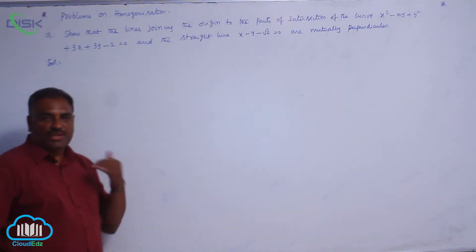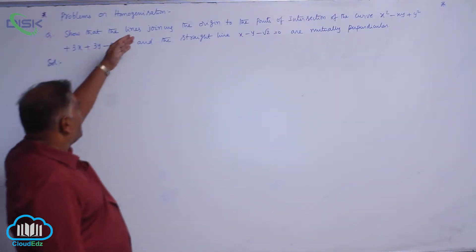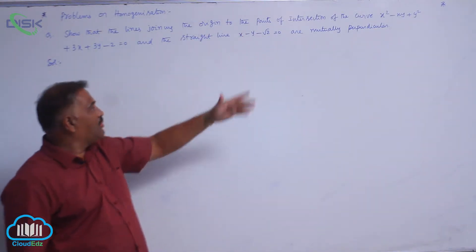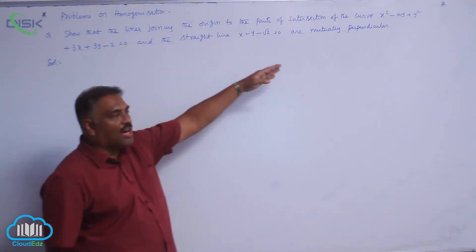We will discuss problems on homogenization. Show that the lines joining the origin to the points of intersection of the curve and the straight line are mutually perpendicular.